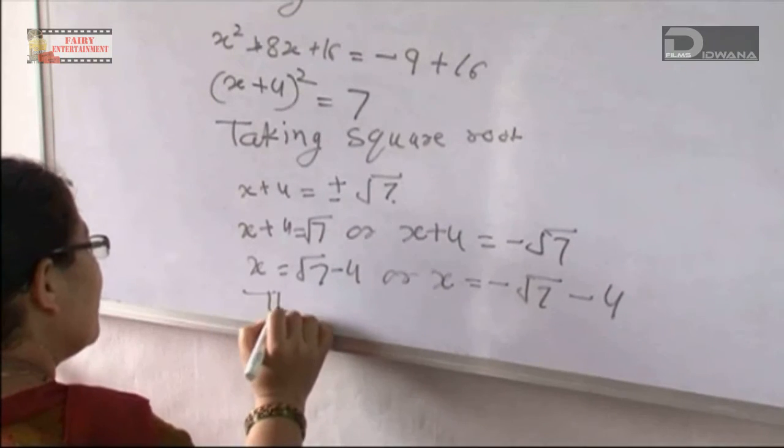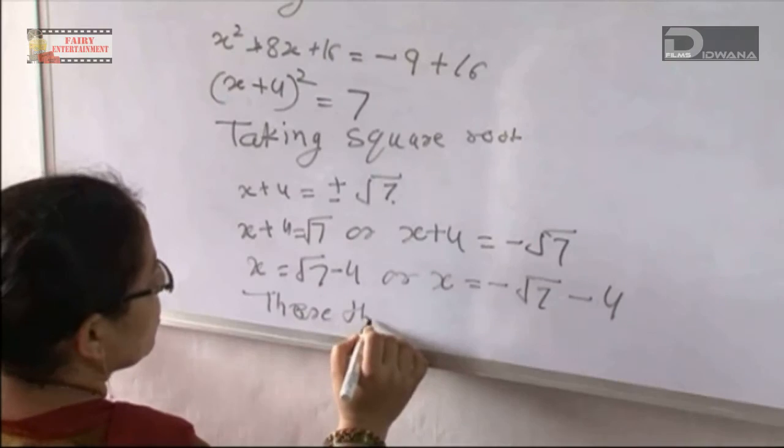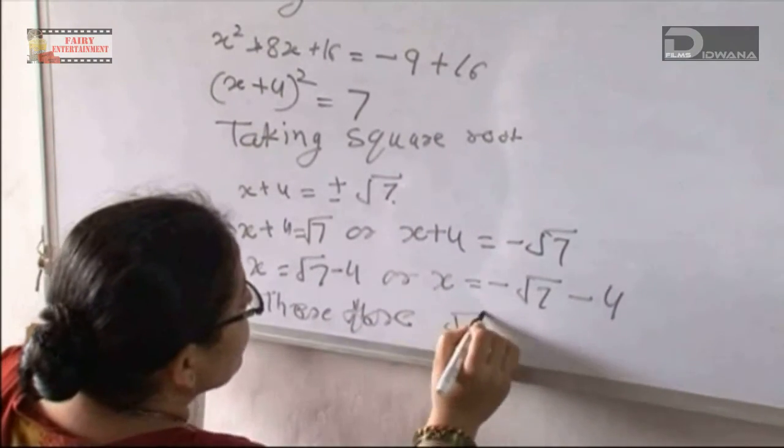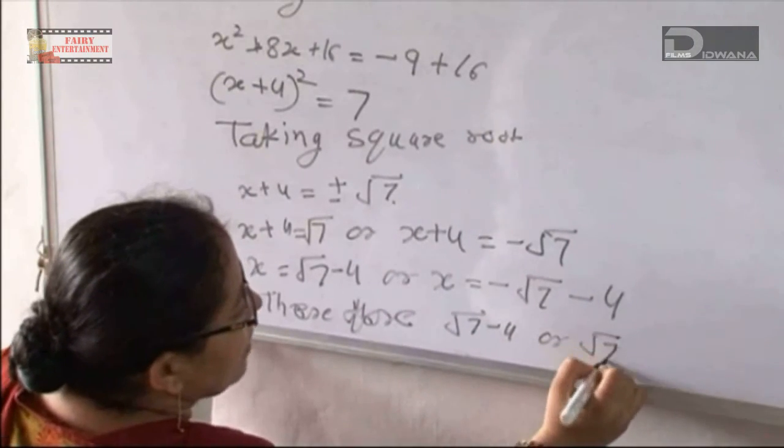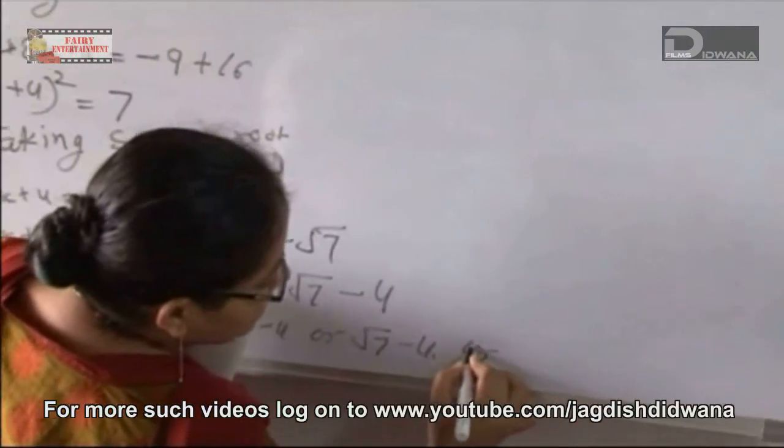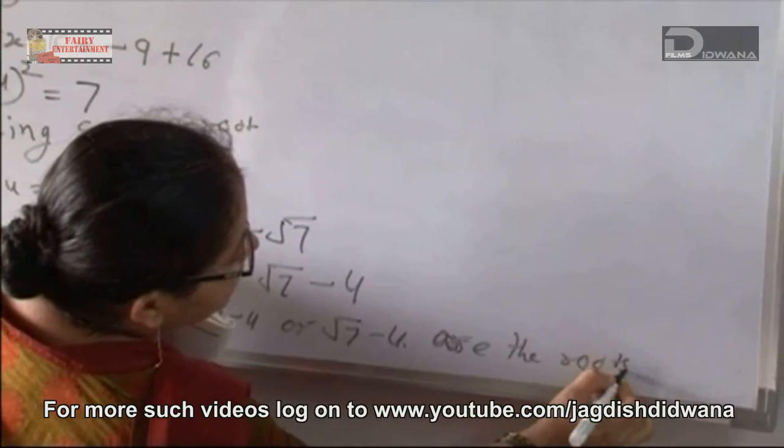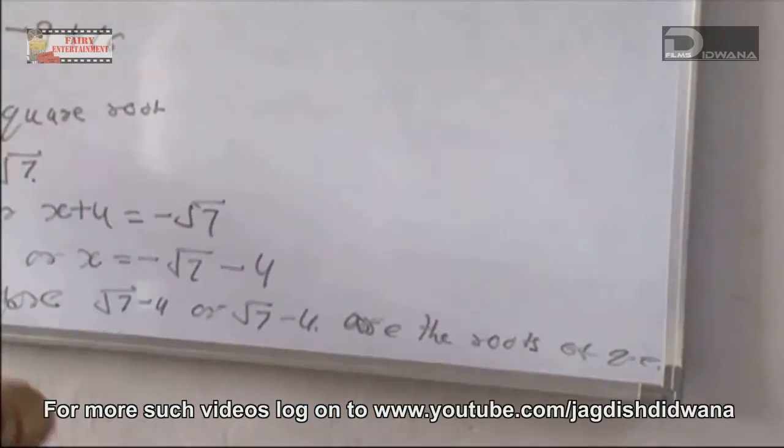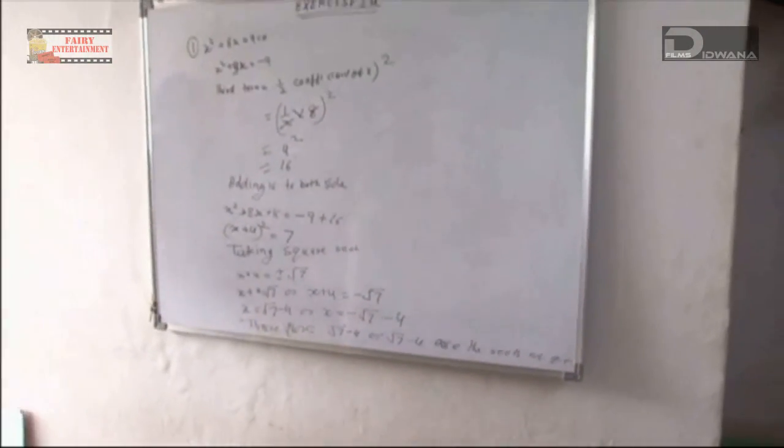Therefore, √7 - 4 and -√7 - 4 are the roots of the quadratic equation.